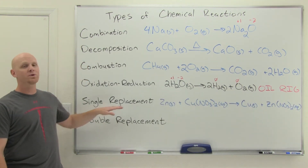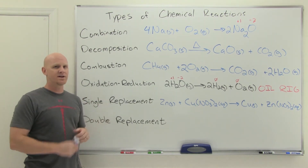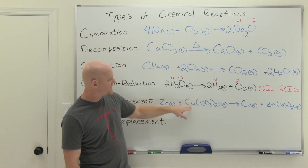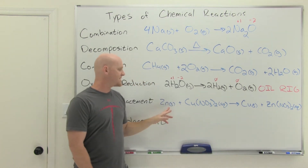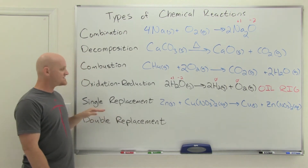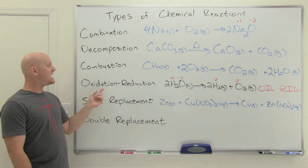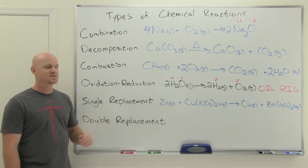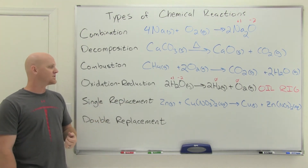The next kind of reaction is a single replacement reaction, sometimes called a single displacement reaction. It's simply where one element replaces another in a compound. The example is elemental zinc reacting with copper nitrate: zinc replaces the copper to form zinc nitrate, leaving copper alone. We'd say zinc replaced — or displaced — copper. Every single replacement reaction is an example of an oxidation-reduction reaction.